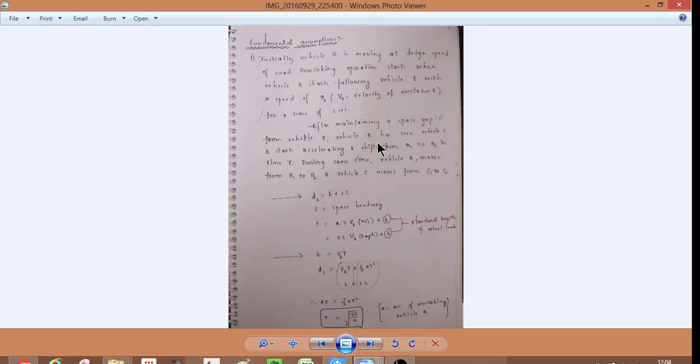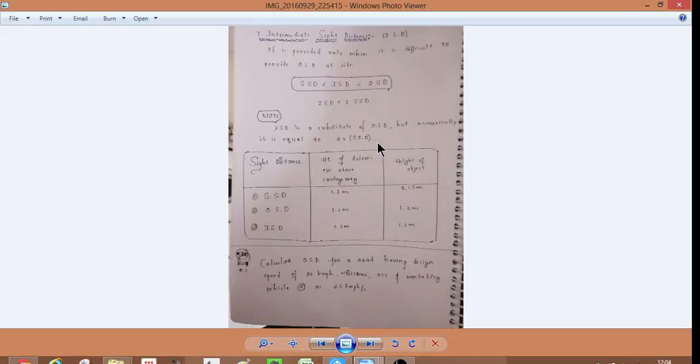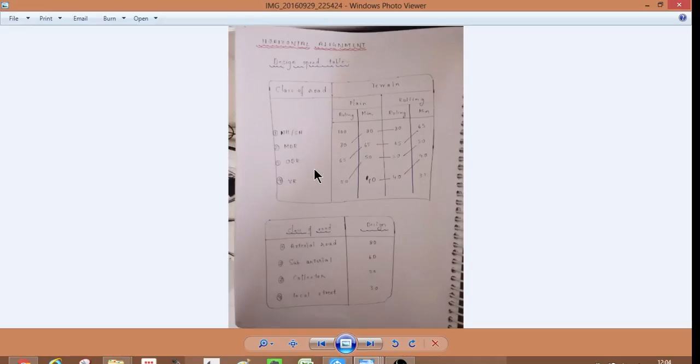Then, overtaking sight distance. You need not remember this one now. Overtaking zone. Effect of gradient in OSD. So, see intermediate sight distance is intermediate of the overtaking sight distance and stopping sight distance. It is in between these two.